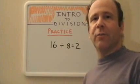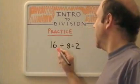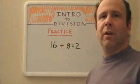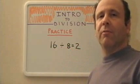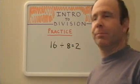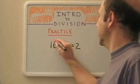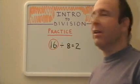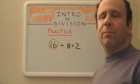Let's go ahead and do a practice problem. In the problem 16 divided by 8 equals 2, circle the number that represents the dividend. If you circled the 16, you are correct. The dividend is the number being divided.